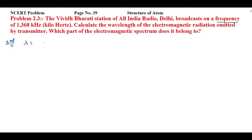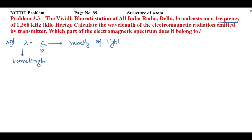The formula is lambda equal to c by nu. Here lambda is wavelength — we have to find the value of wavelength. c is the velocity of light, and nu is frequency.